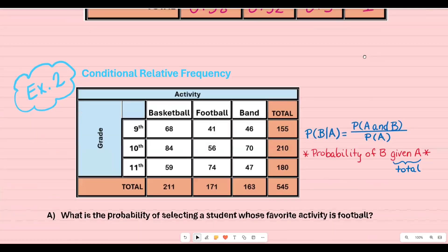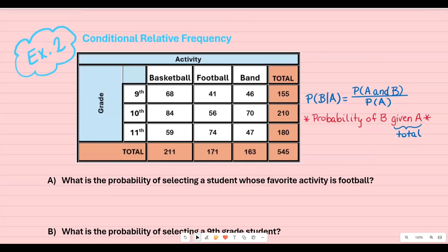Now example two, we're going to do conditional relative frequency based off of the original table but the only difference is the totals are now added. What really happens with your conditional relative frequency when you're trying to find probability is normally you'll see a notation that looks like this. This is the formula that you are actually using. You'll see it more so in parts c and d of the questions below.